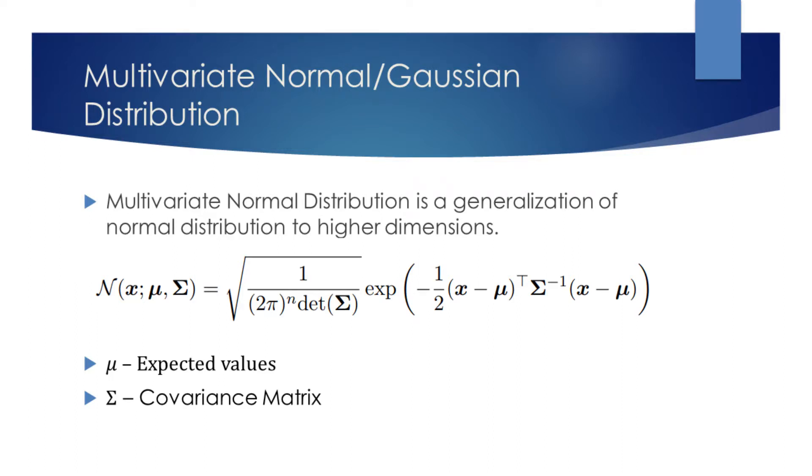Multivariate normal distribution is a vectorized version of the normal distribution. It gives us the distribution for many random variables with Gaussian distribution at once.